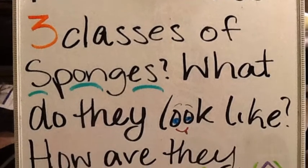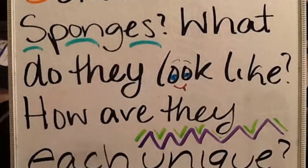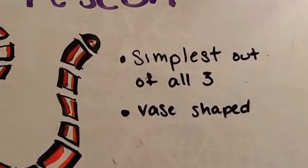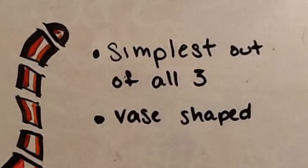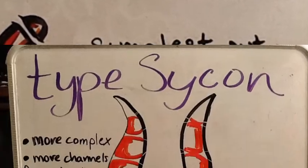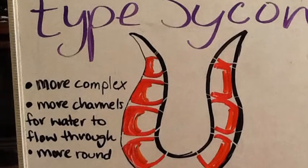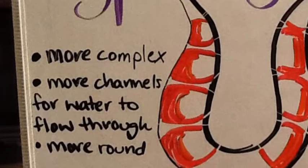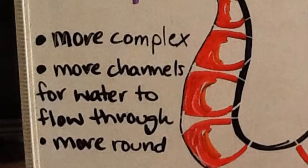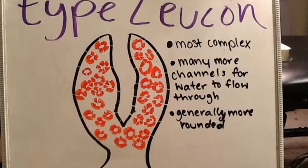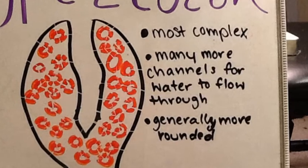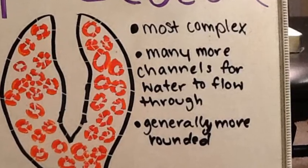What are the three classes of sponges? What do they look like? How are they each unique? Type Ascon is the simplest out of all three and is vase-shaped. Type Sycon is more complex, has more channels for water to flow through, and is more round. Type Leucon is the most complex, has many more channels for water to flow through, and is generally more round.